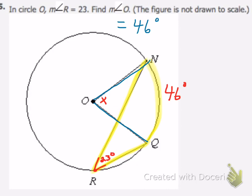arc that it creates. So we use the measure of angle R to find the measure of arc NQ, and then we use the measure of arc NQ to find the measure of angle O. So that's how this problem works. Thanks.